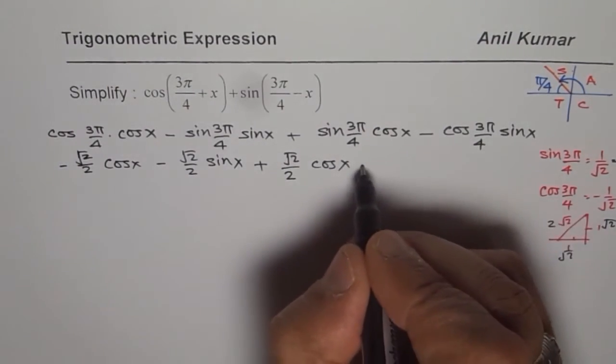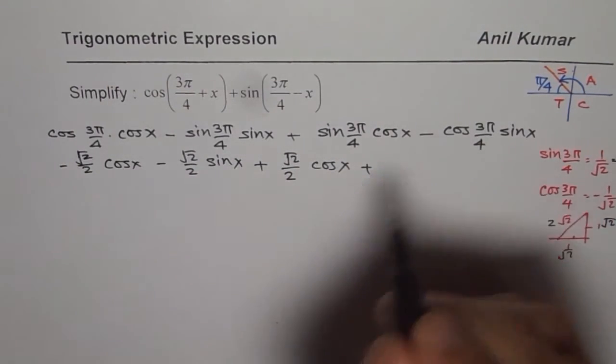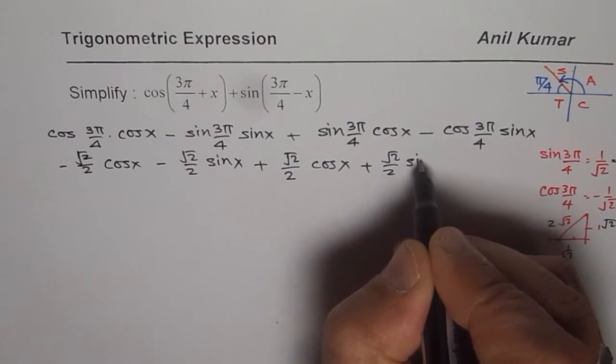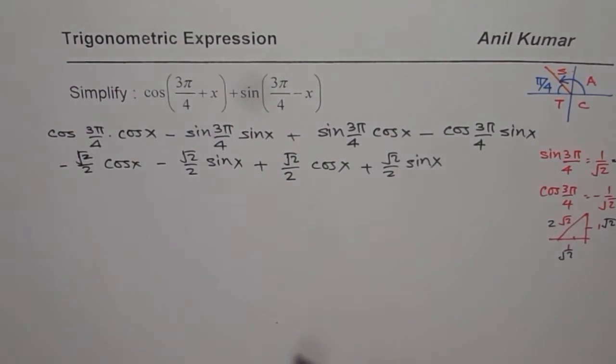And this is negative. So negative and negative becomes positive √2/2 sin(x). So that is what we get.